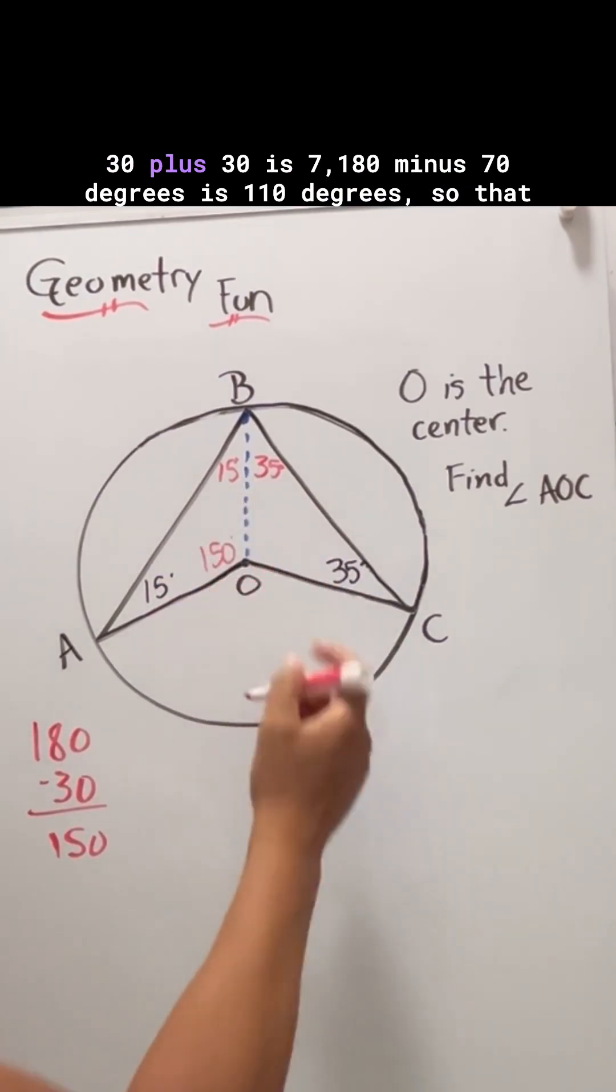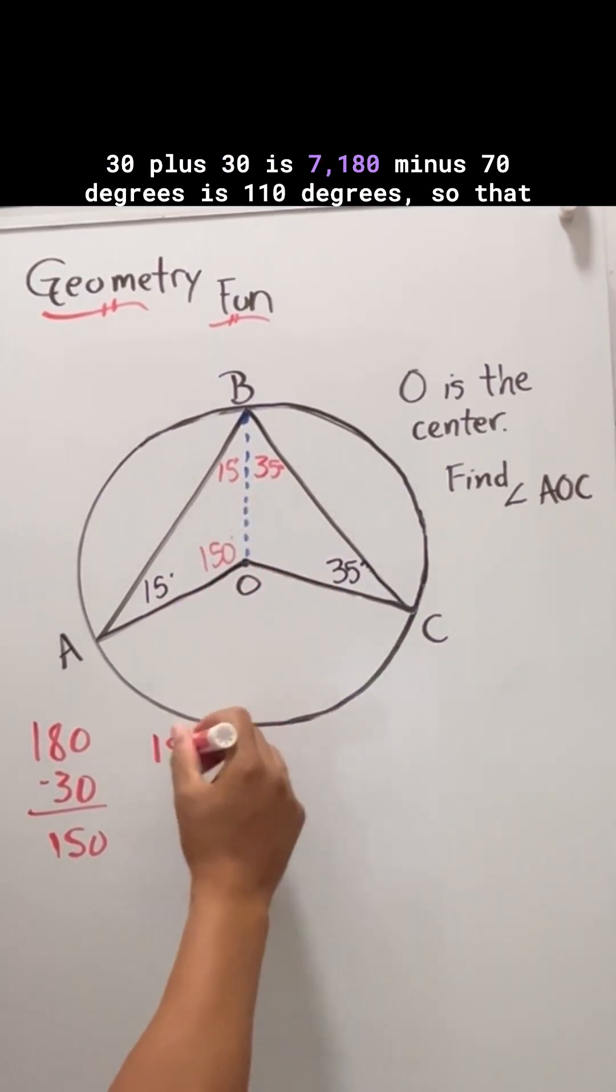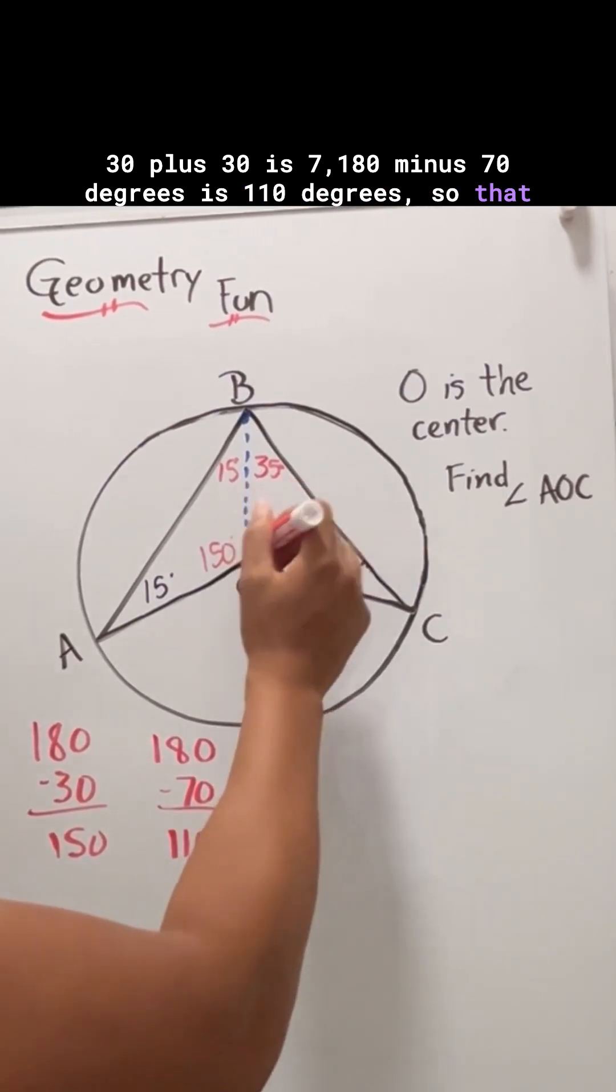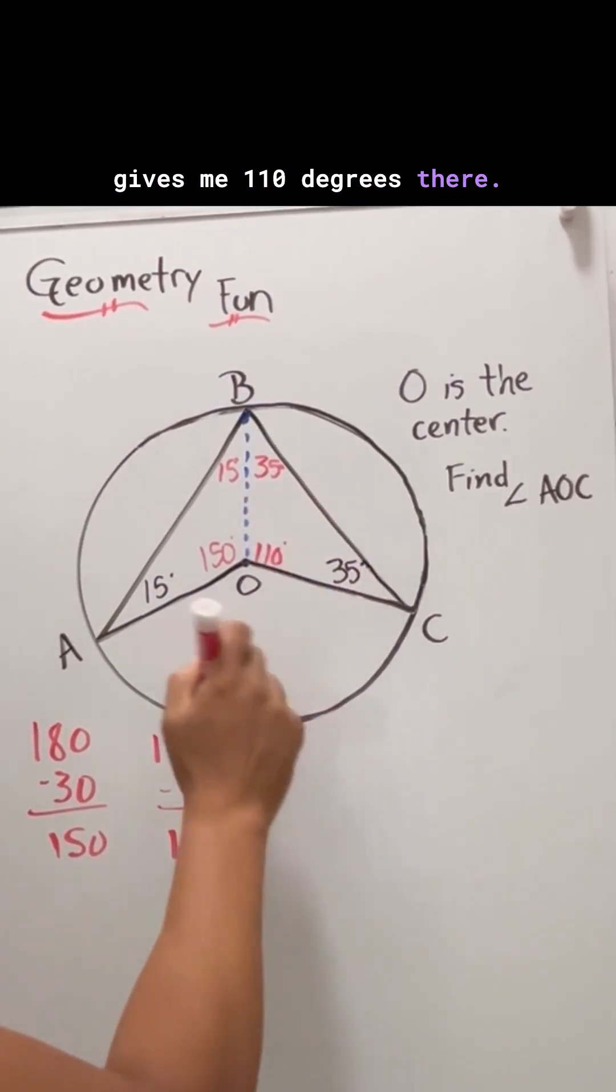Now I'll do the same thing here. 35 plus 35 is 70. 180 minus 70 degrees is 110 degrees.